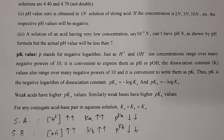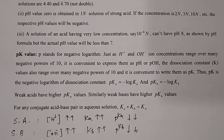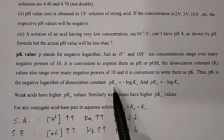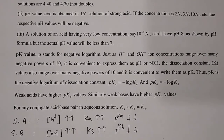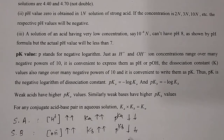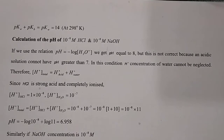Weak acid has higher pKa values. To remember: for a strong acid, H+ concentration is higher, Ka value is also higher, but pKa value decreases — because pKa = −log Ka, so they are inversely related. Similarly for a strong base: OH− concentration increases, Kb increases, pKb decreases. And pKa + pKb = pKw = 14.